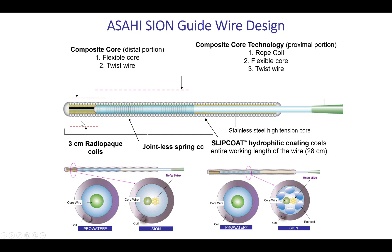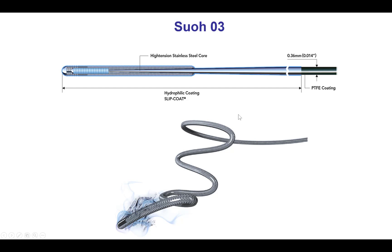The Sion has a composite core construction at the tip, which allows good transmission of torque from the back end to the front end of the wire. The Suoh 03 is the softest wire available on the market, designed to cross epicardial collaterals which can be very tortuous. Because it is so soft, it can negotiate through very tortuous lesions, making it another option for wiring through tortuosity.